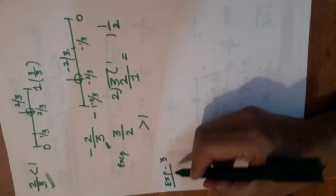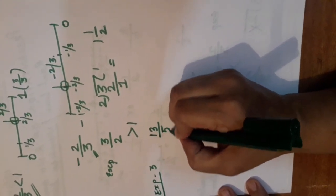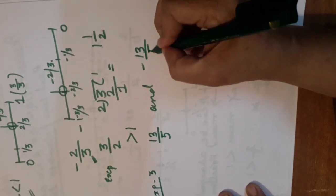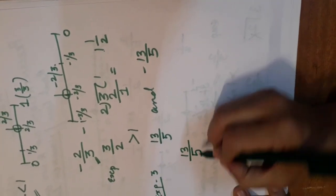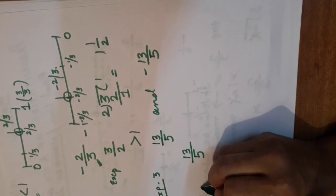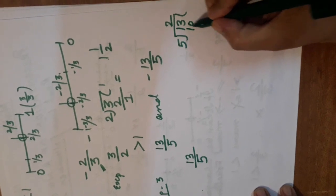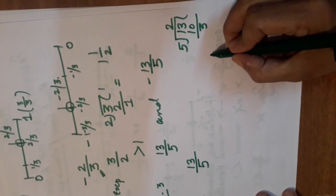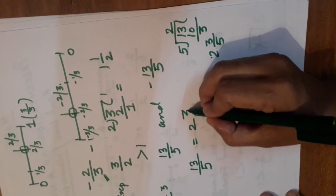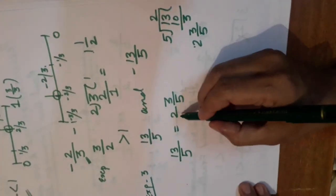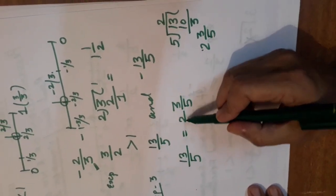So class, now the third example I am going to explain you. This is represent 13 by 5 and minus 13 by 5 on a number line. So class, see, this is the number 13 by 5. First of all, I have to check whether the number is greater than 1 or not. So let me divide it. 13 by 5. Yes, it is dividing. 5 twos are 10 and remainder is 3. That means 5 twos are 10 and 3. This is equal to 2, 3 by 5. Means, this number is more than 2. Not only more than 1, this number is more than 2. 2, 3 by 5.